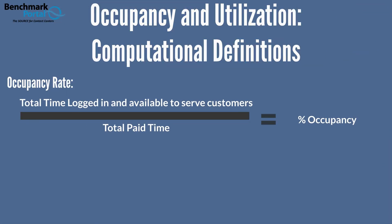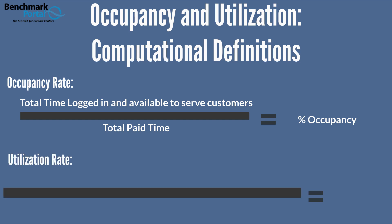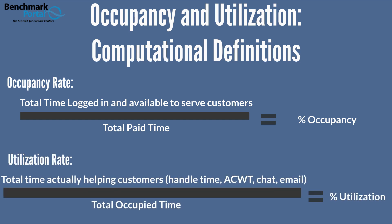Both occupancy and utilization are expressed as percentages, so we need to understand the numerator and the denominator. The calculations accepted for benchmarking purposes are as follows. Occupancy is expressed as a percent of total paid time — that is, total time in place, plugged in, and available to serve customers divided by total paid time. Utilization is expressed as a percent of occupied time — that is, total time actually helping customers as a percent of occupied time. By computing utilization this way, a spotlight is put on how well workforce management is filling up the available occupied time — how well it is forecasting and scheduling people to take calls during the available time.